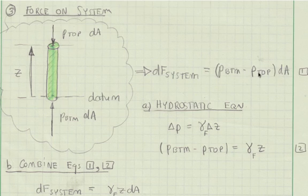To find this pressure difference, we use the hydrostatic equation. The hydrostatic equation, in general, tells us that a pressure change is a specific weight times an elevation change. Applying this, the pressure change is p bottom minus p top, and the elevation change is simply z, where z is defined as the height of my system with respect to my datum.